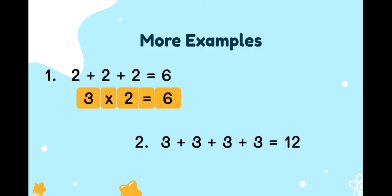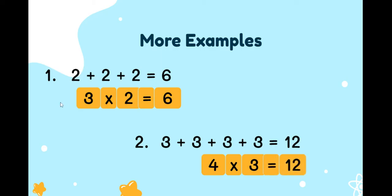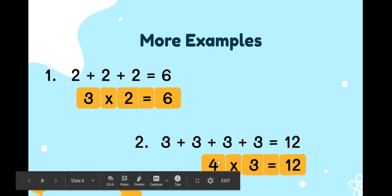More example. The multiplication sentence is four times three is equal to twelve. Why, Ms. Benna, is this four? Because there are four groups of three: one, two, three, four. Four groups of three is equal to twelve.